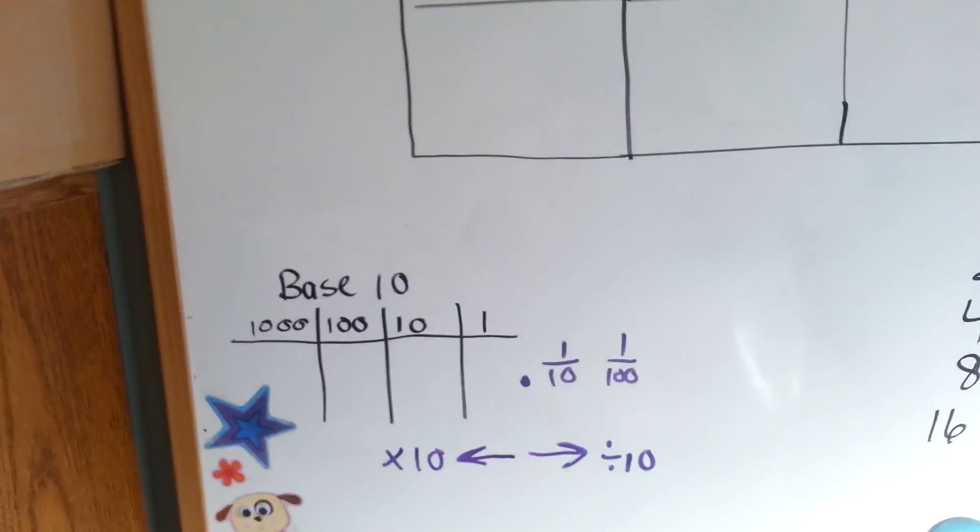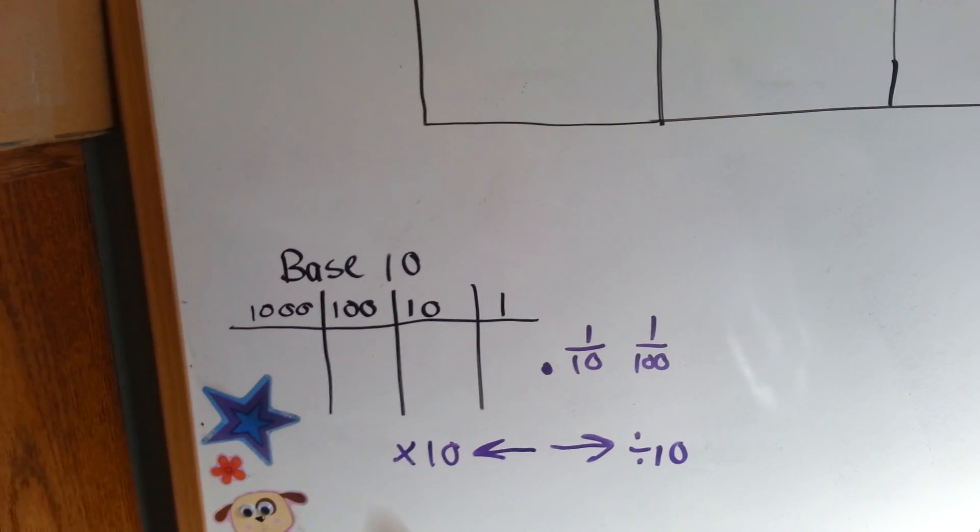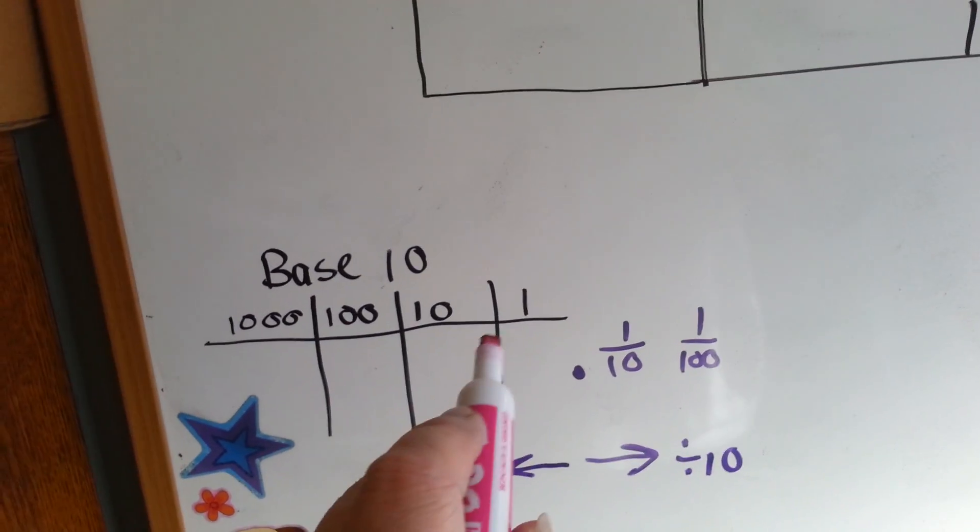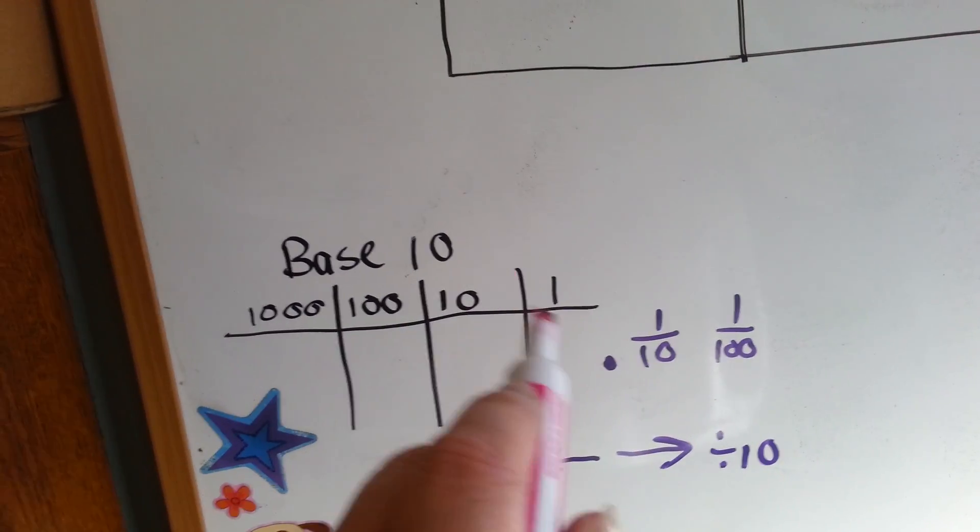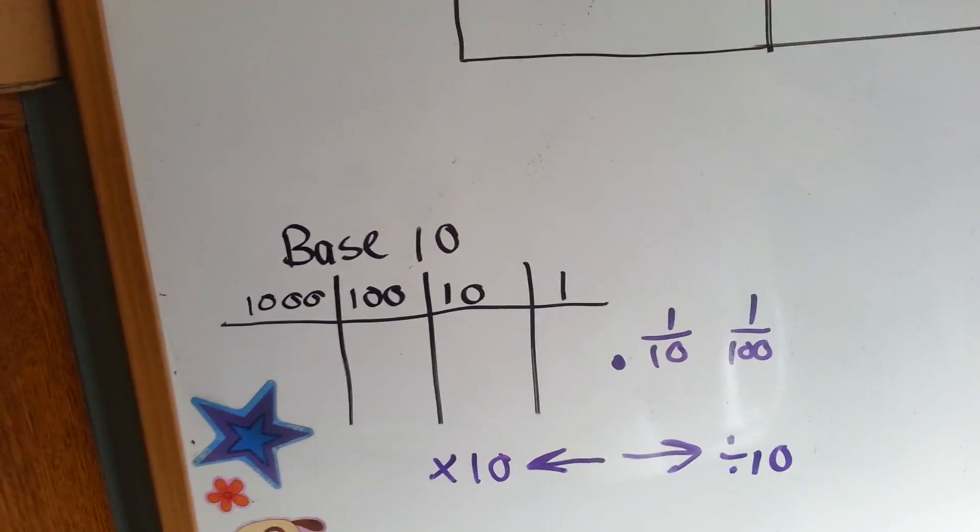In our everyday math that we deal with numbers and count, we use base 10. Everything, all the place values are based off of the number 10. That's why it's called base 10. It's based off of 10.